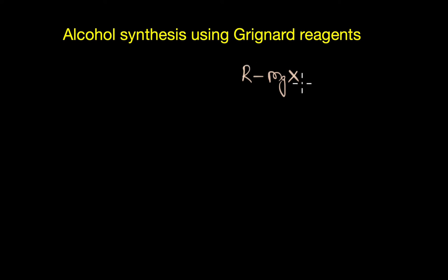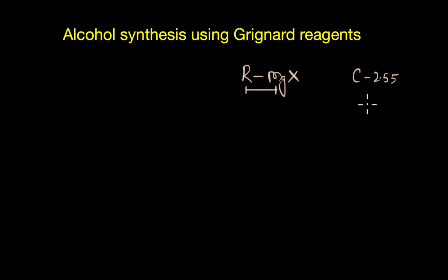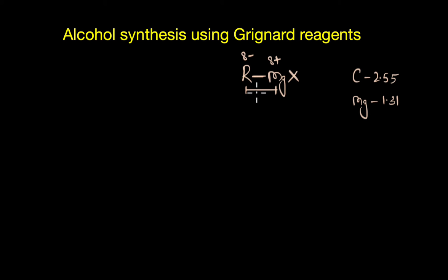The usability of Grignard's reagent or any of these organometallic reagents comes from the electronegativity difference between carbon and the metal. The electronegativity of carbon is about 2.55 and that of magnesium is about 1.31. As a result, carbon gets a partial negative charge and magnesium, being more electropositive, gets a partial positive charge. This partial negative charge on the carbon atom is very useful because it can act as a very strong nucleophile as well as a strong base.